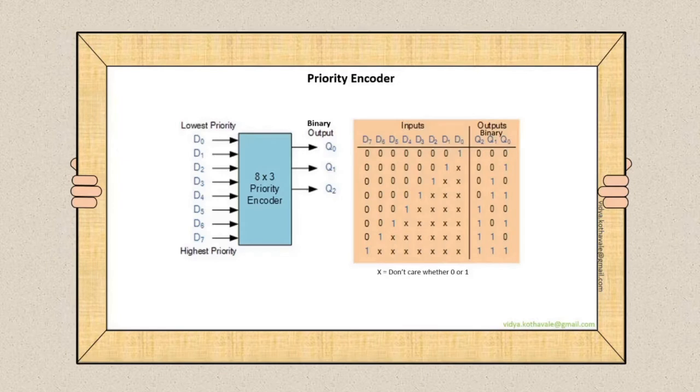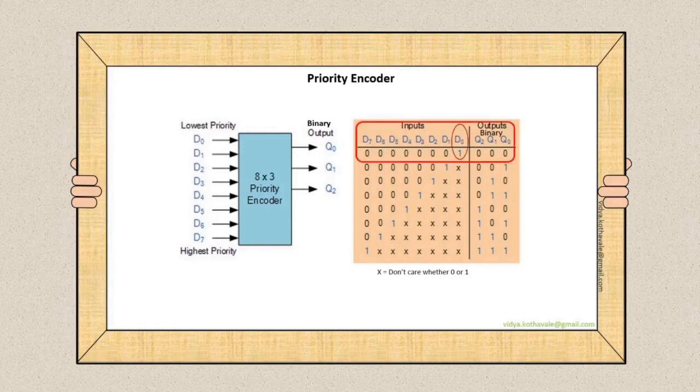Priority encoder: We can see an 8 by 3 priority encoder which consists of 8 input lines and 3 output lines. Out of the 8 input lines, D0 has the lowest priority and D7 has the highest priority. If input D0 is activated, the binary output equivalent to decimal 0, i.e. 000, appears at the output.